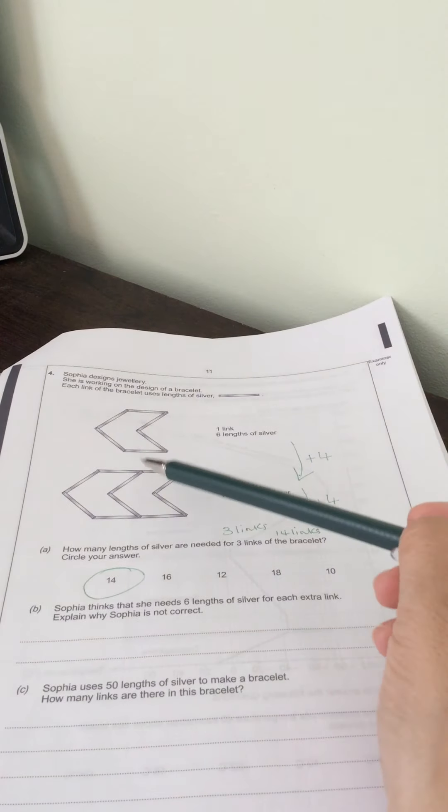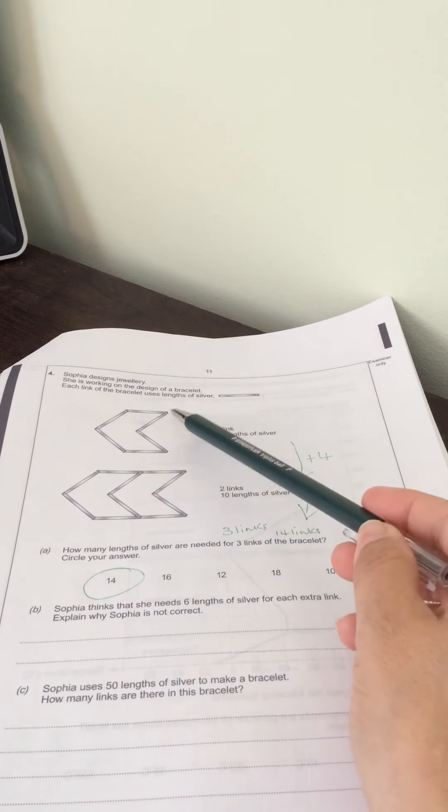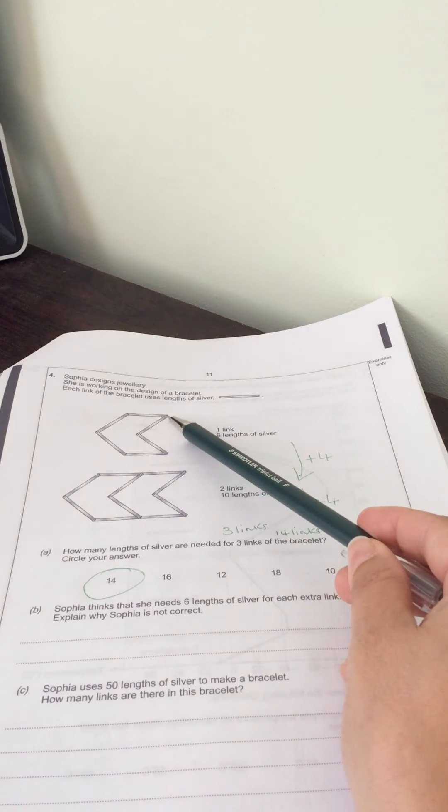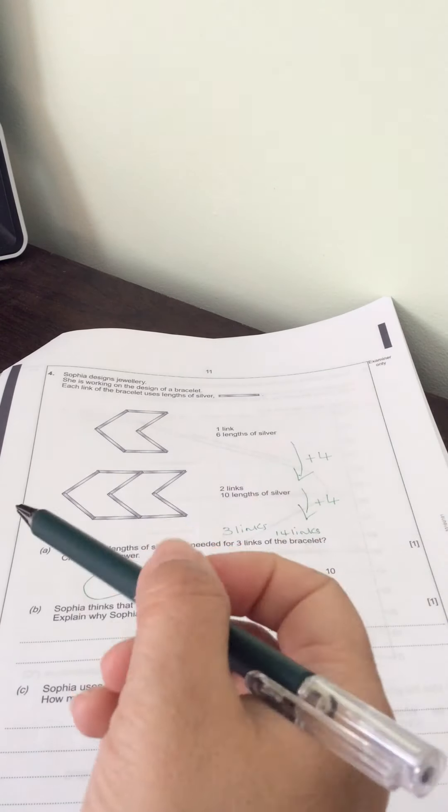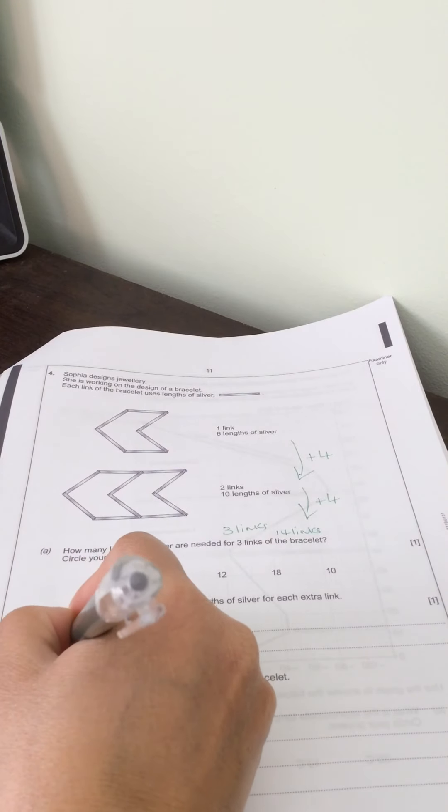And the reason it's going up in fours is that this front piece here is the piece, is two lengths of silver from the previous piece. So you could just say, because the pattern goes up in fours.